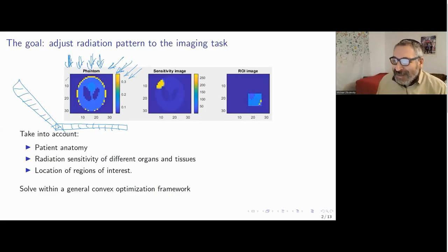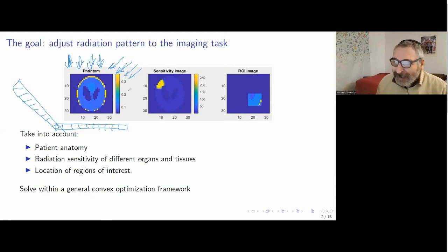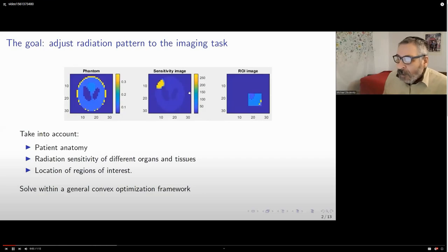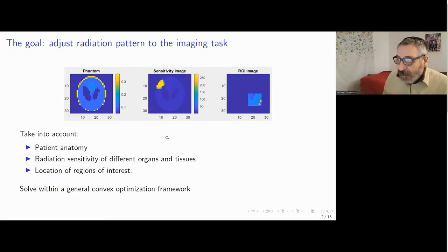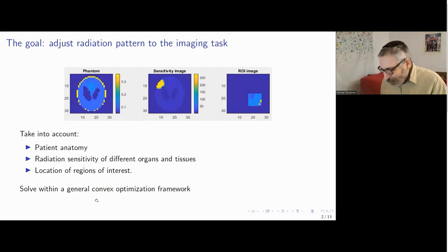There are already numerous works dedicated to this very important topic. What we do in our study is that we succeeded in setting all the tasks within a general convex optimization framework, with the attempt to find an efficient and reliable numerical solution. We also take into account the sensitivity image and the ROI image, putting everything within a convex optimization framework — something not done in existing works on CT radiation planning.